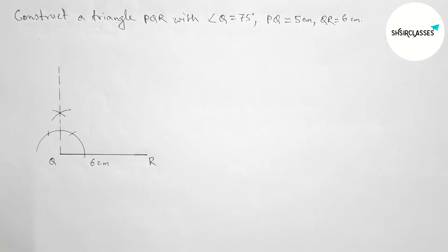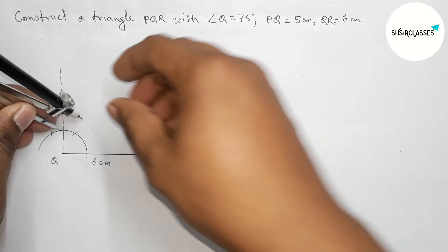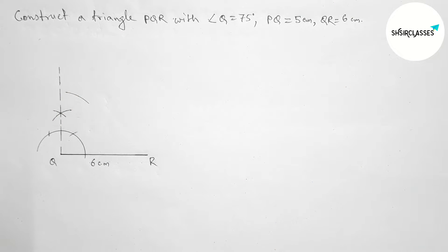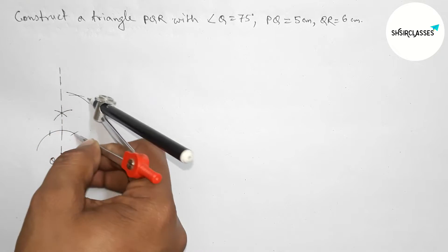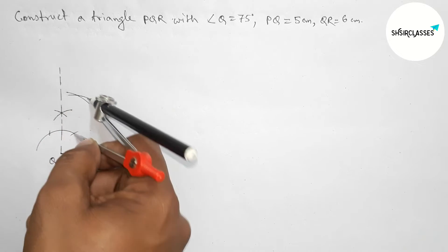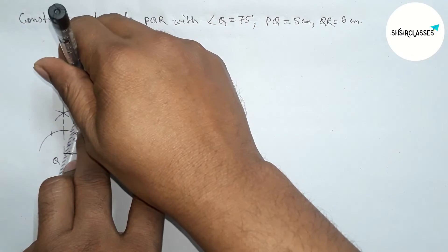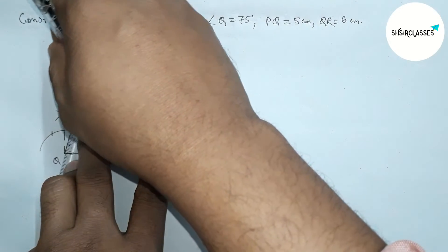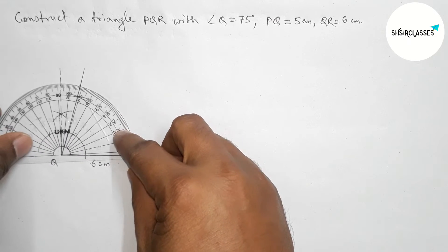Next, putting the compass here and taking any length, drawing an arc. Now with the same length, putting the compass on the other point and cutting the arc here. Both arcs meet at a point, so now joining this line to get the 75 degree angle.